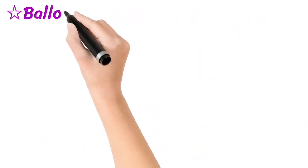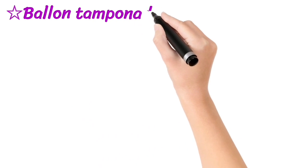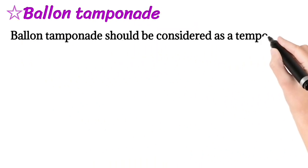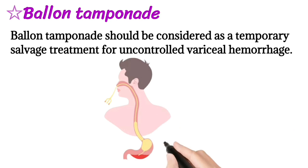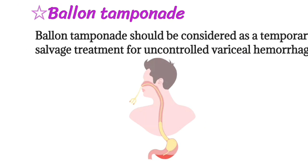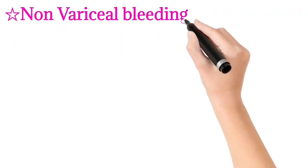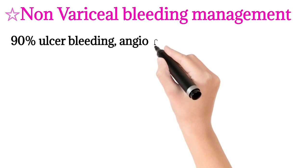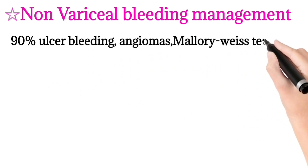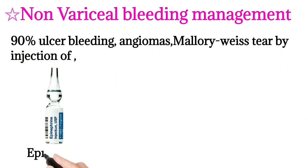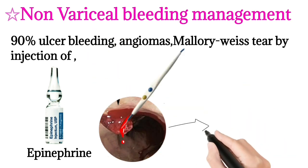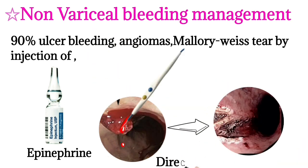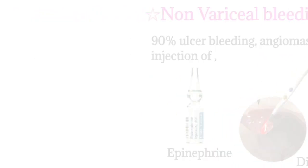Balloon tamponade should be considered as a temporary salvage treatment for uncontrolled visceral hemorrhage. For non-visceral bleeding management, 90% of ulcer bleeding and angiomas and Mallory-Weiss tears are managed by injection of epinephrine and by direct cauterization.